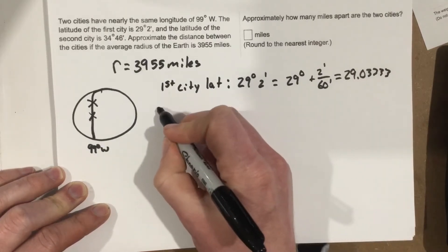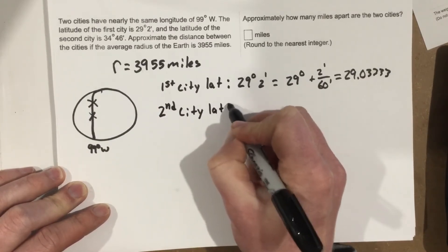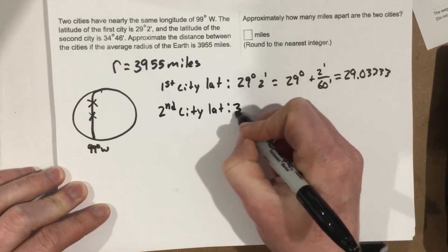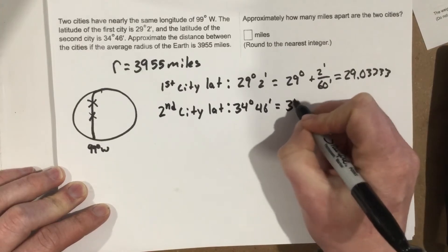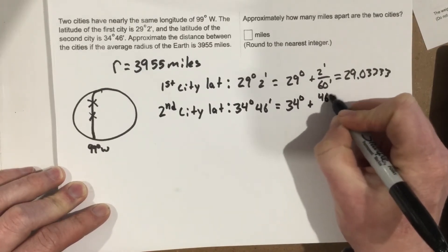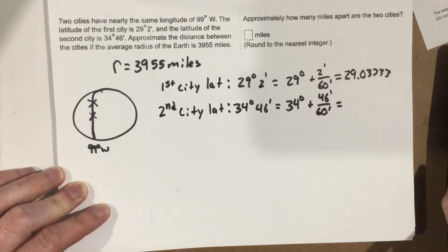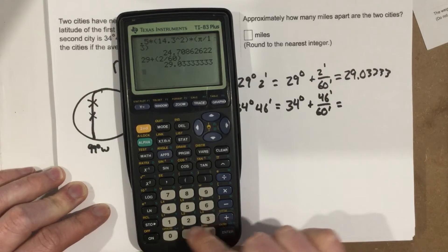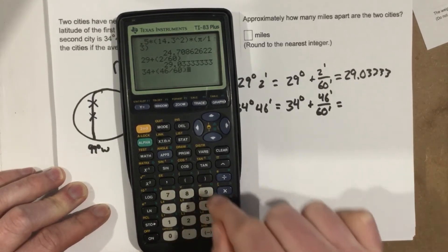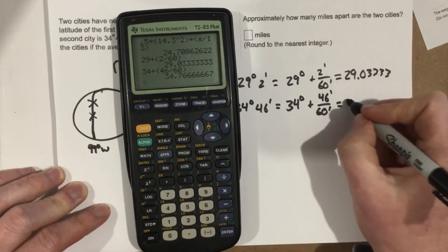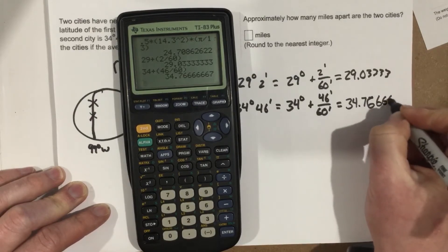For the second city's latitude, that's going to be 34 degrees 46 minutes. So we're going to do 34 degrees plus 46 minutes over 60 minutes. Plugging that in: 34 plus 46 divided by 60 gives us 34.7667 degrees.